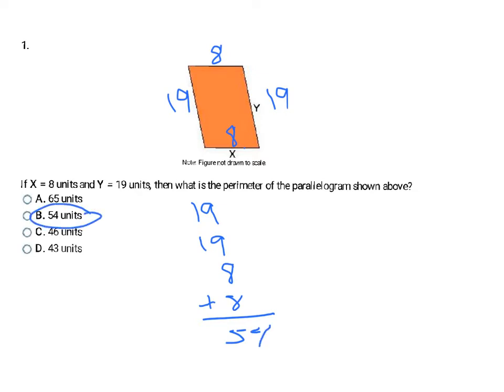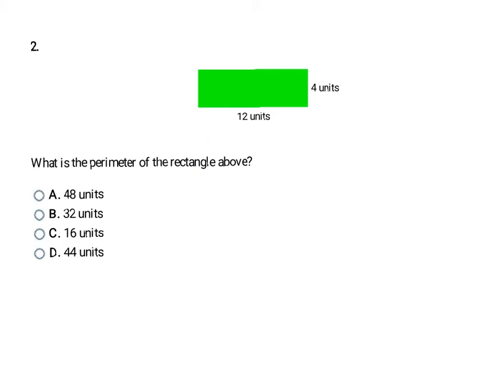The next question asks for the perimeter of a rectangle. They give us only two sides, but since opposite sides of a rectangle are congruent, the bottom is 12 so the top is also 12, and the right side is 4 so the left is also 4. Adding all four sides: 12 plus 4 plus 12 plus 4 equals 32 units — choice B.